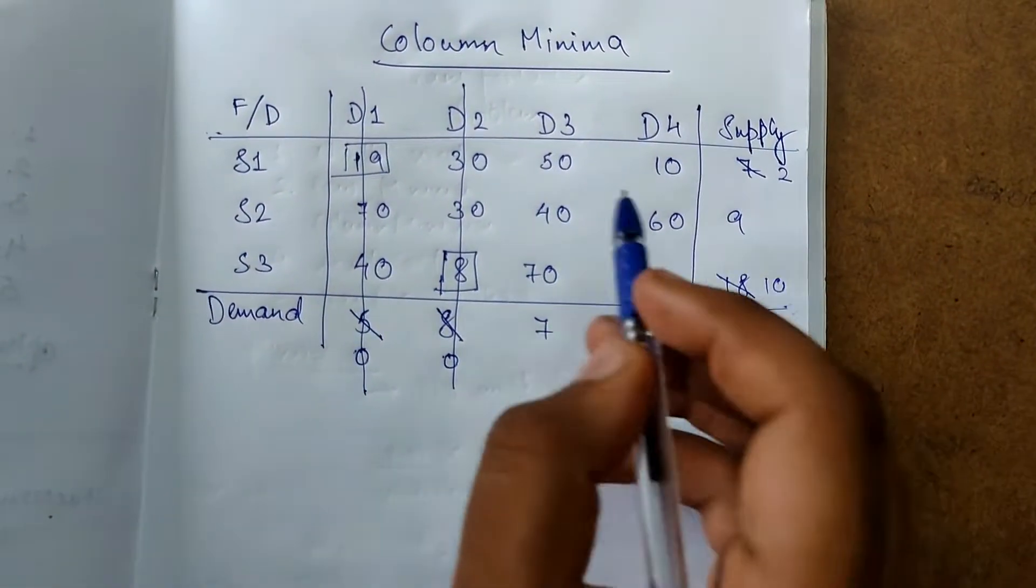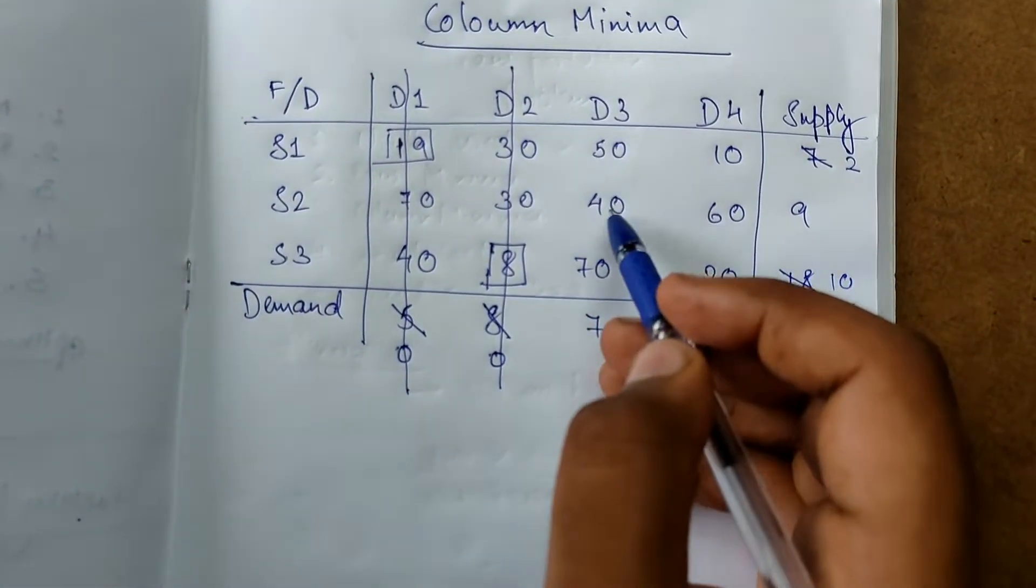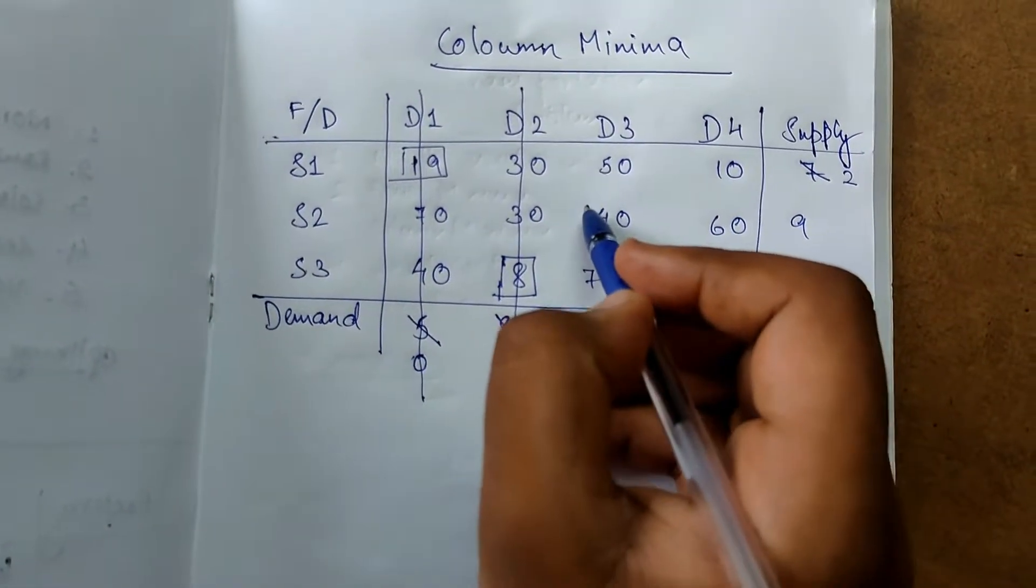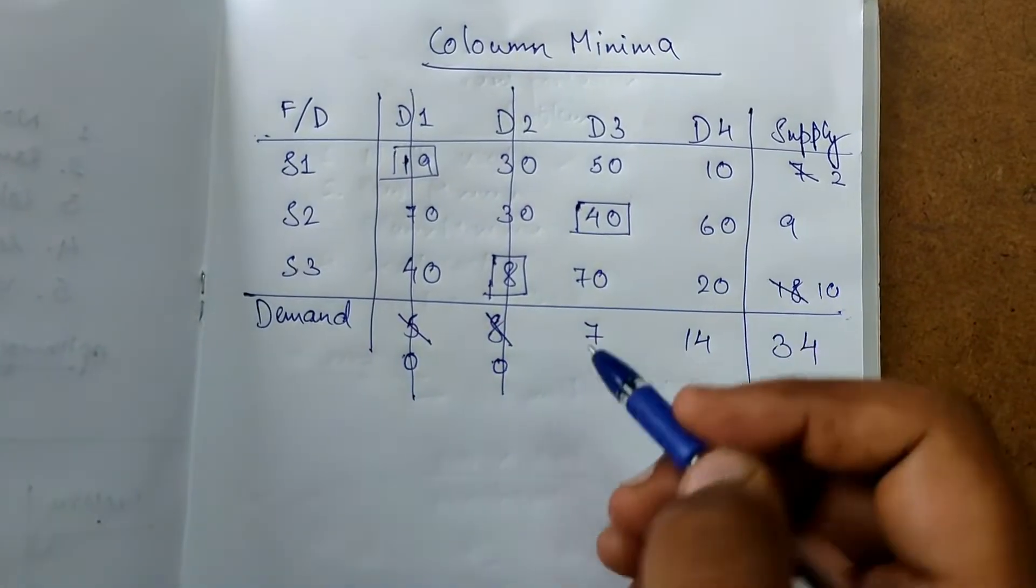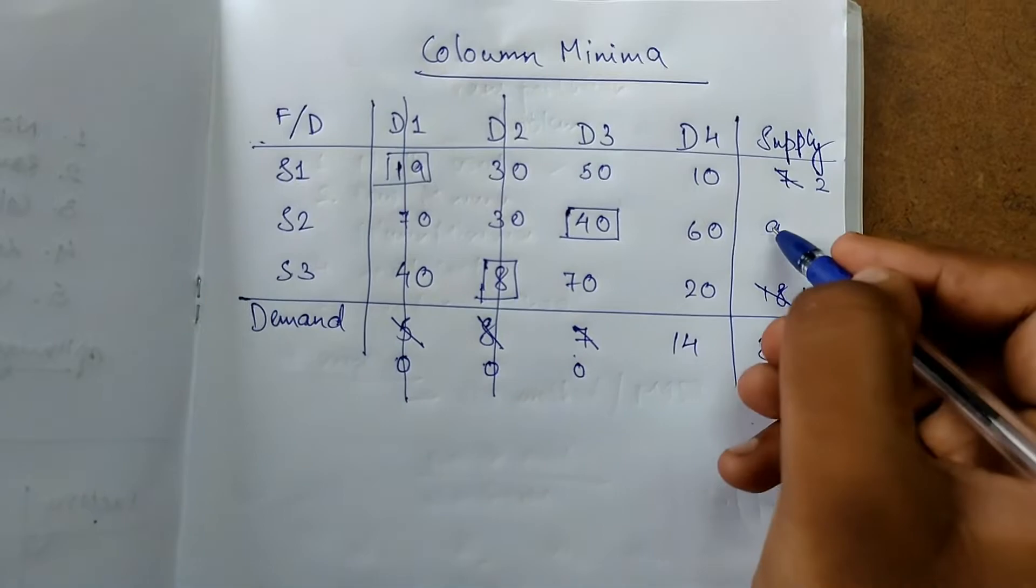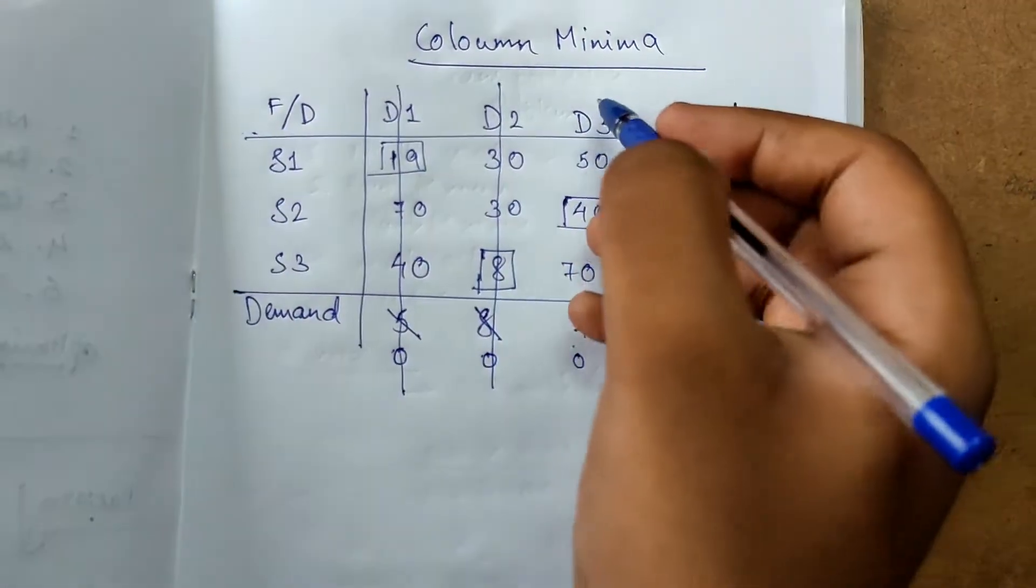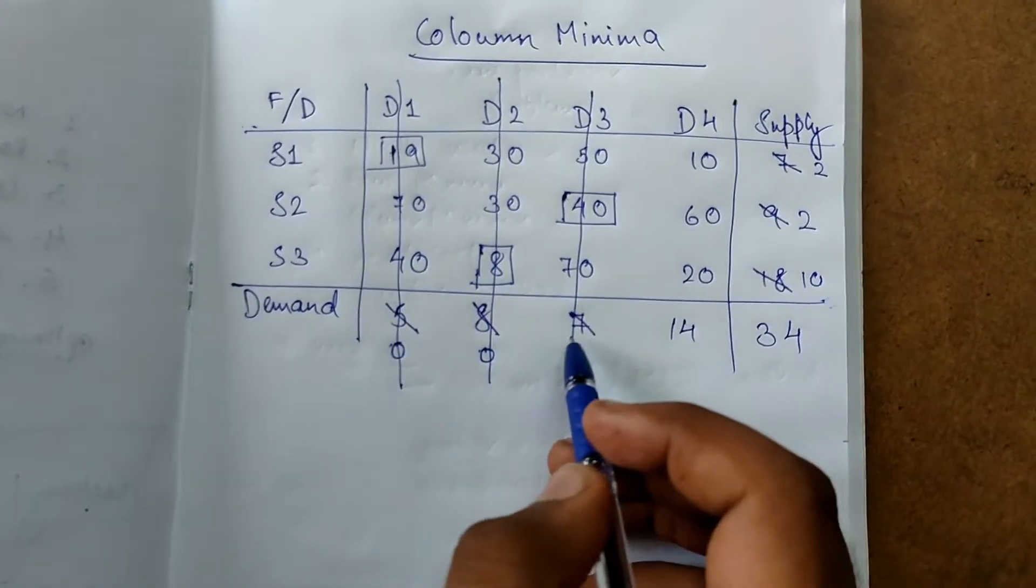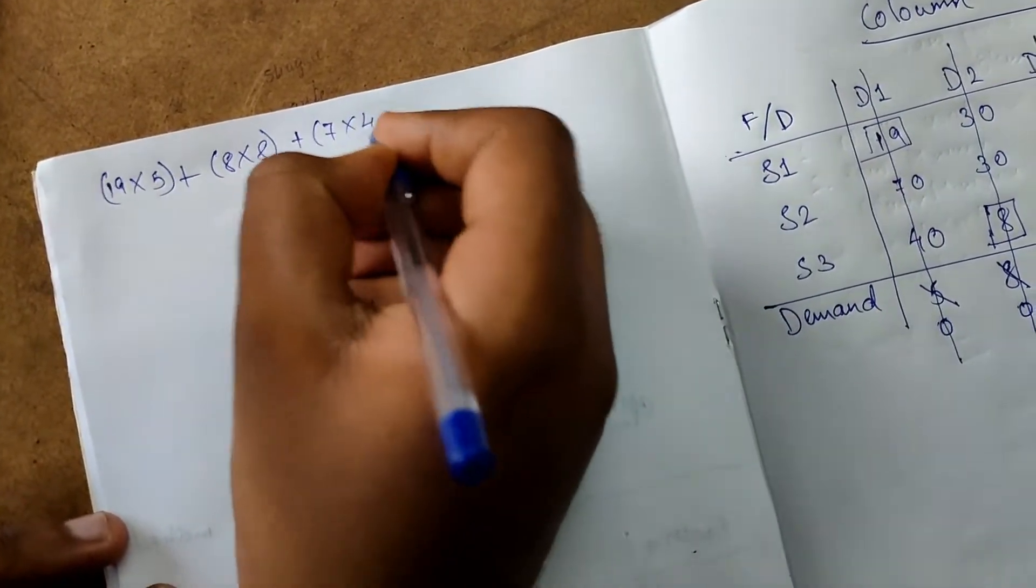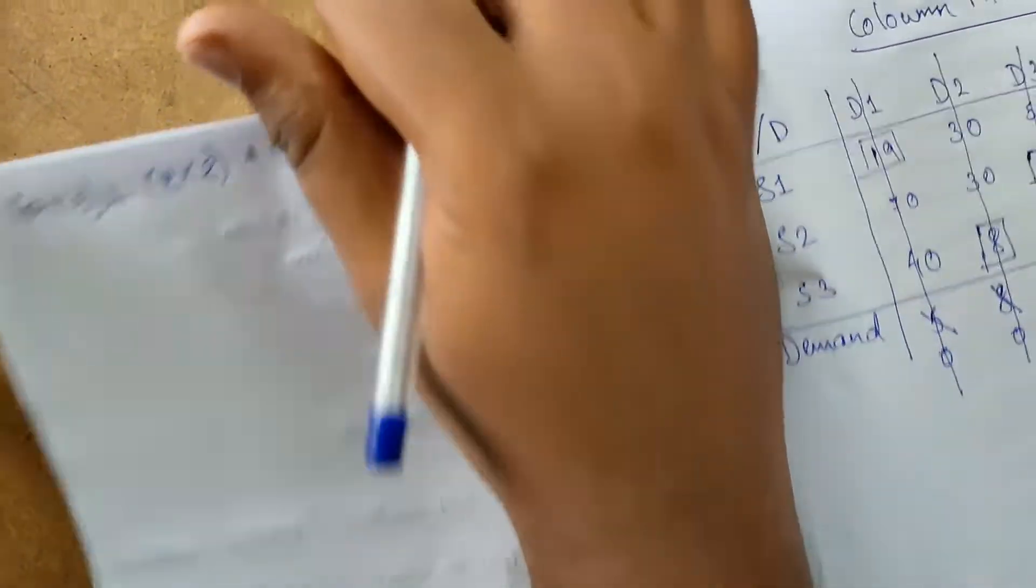Next column, next column is 50, 40, 70. So 40 is the least. We will highlight this one, 7 and 9. 7 minus 7 which is 0 and 9 minus 7 is 2. We will strike off this row and we will multiply 7 with 40, so 7 into 40 plus.